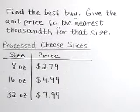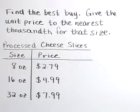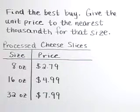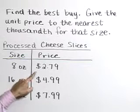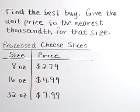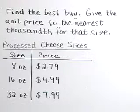Find the best buy and give the unit price to the nearest thousandth for that size. Here we have processed cheese slices in three separate sizes: 8 ounces for $2.79, 16 ounces for $4.99, and 32 ounces for $7.99.